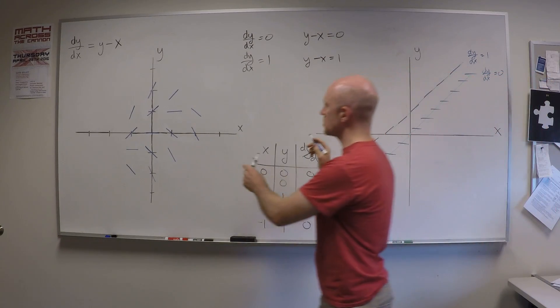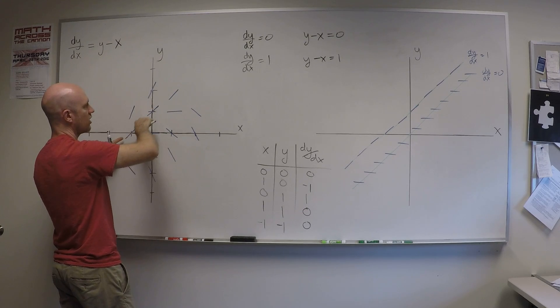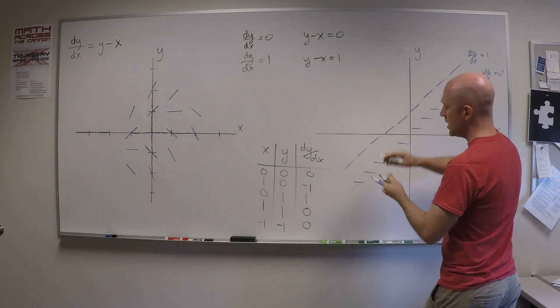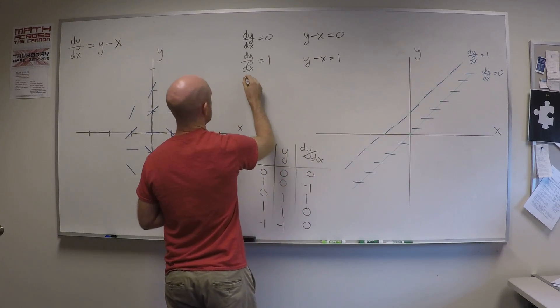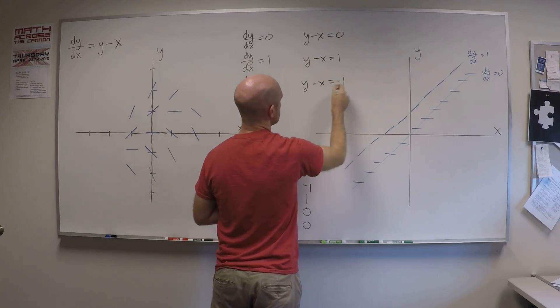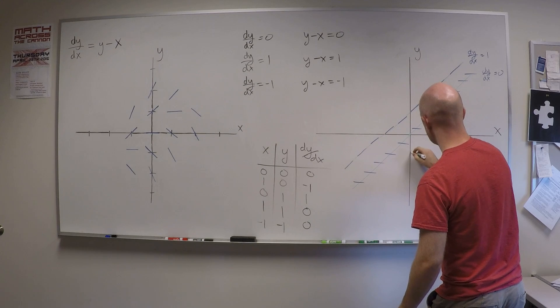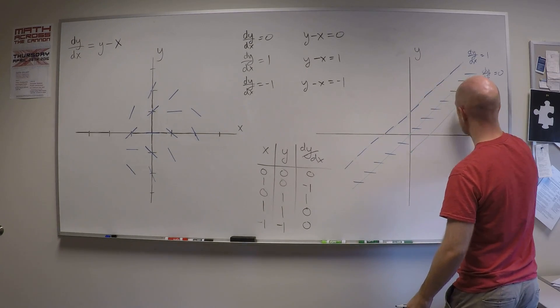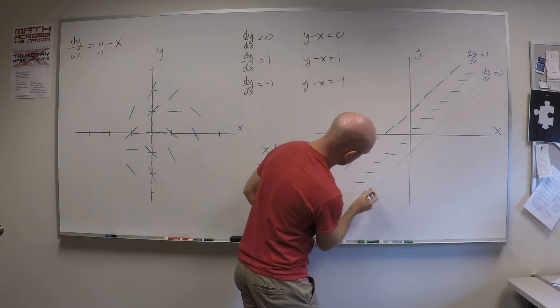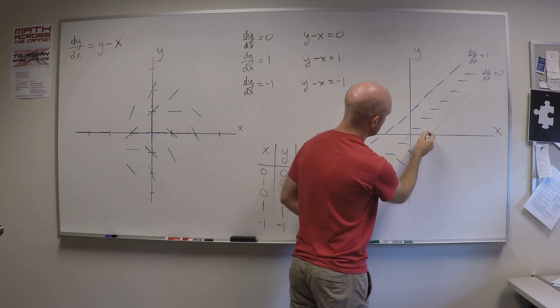And I should mark these. This is dy/dx equals 0. This is dy/dx equals 1. Let's do minus 1 next, but let's just note you can see that here, right here. You can see that line where the slope was 1. Okay. Let's do another one. How about minus 1? Okay. If dy/dx is minus 1, then you have y minus x equals minus 1. And that's y equals x minus 1, which is this line shifted down one unit. There we go. And all these slopes must be a minus 1. So I'll just fill them in like that. Minus 1.